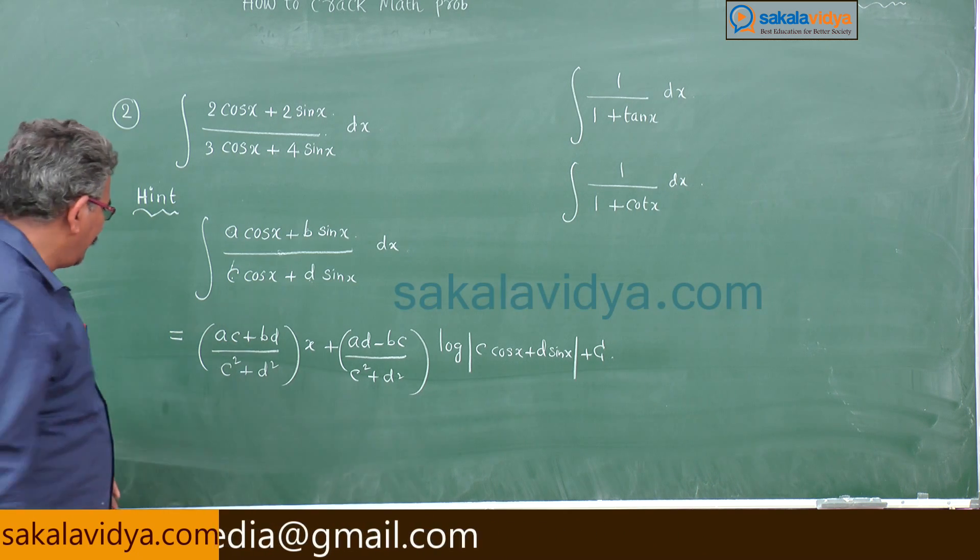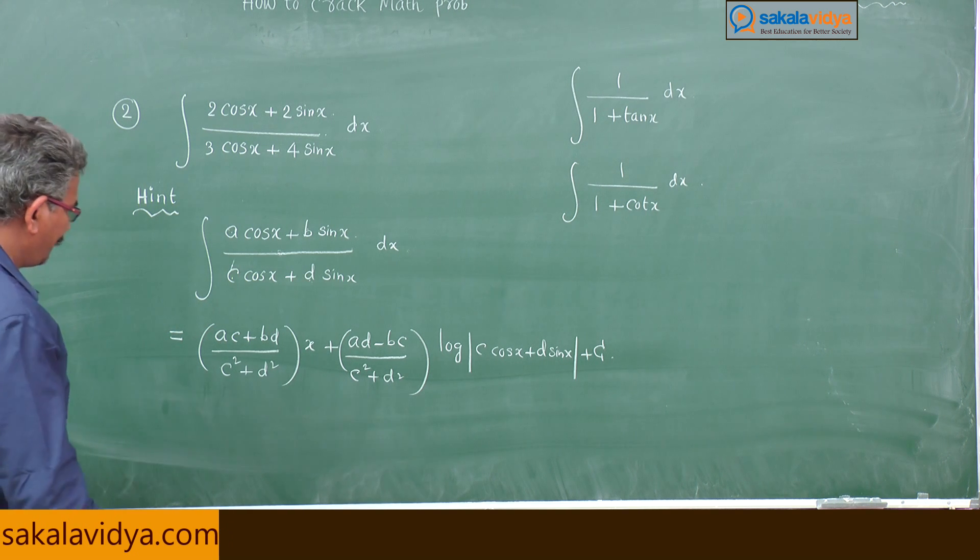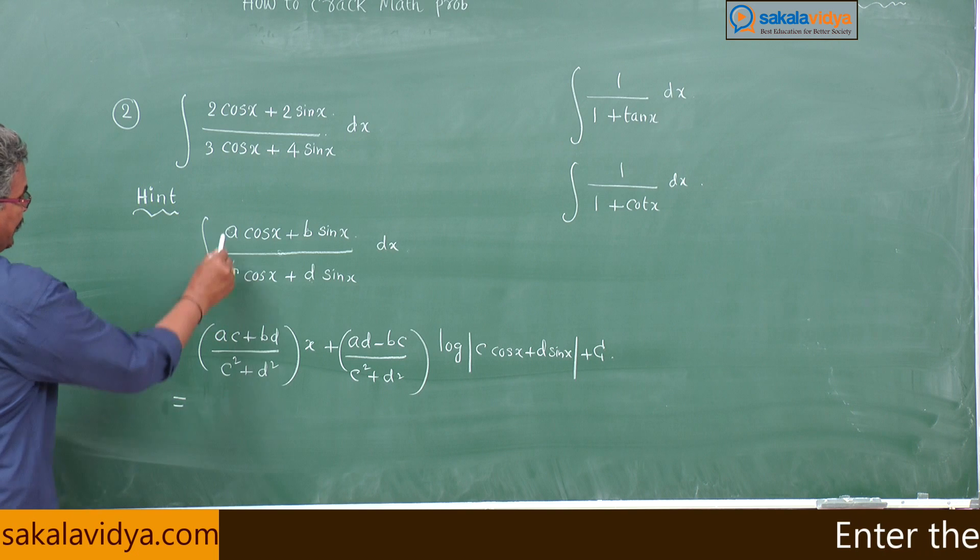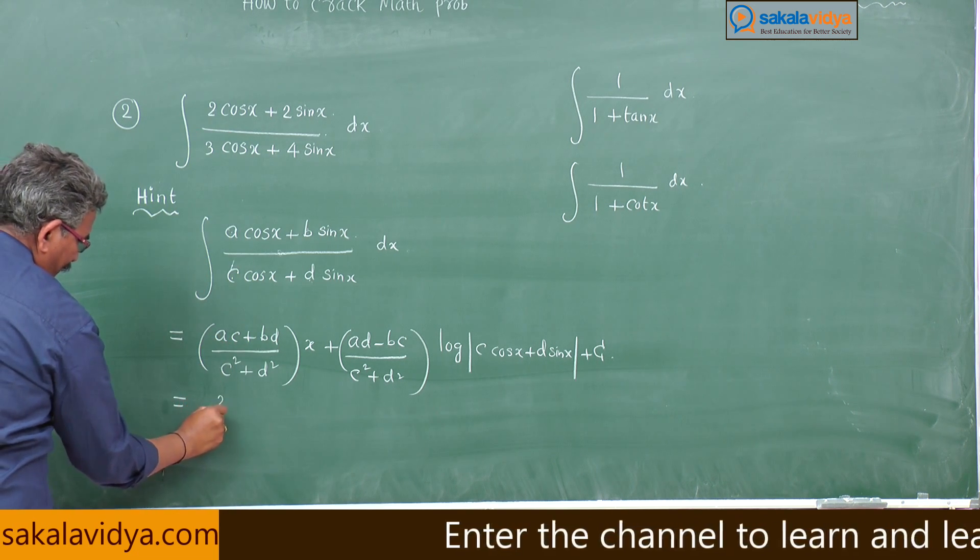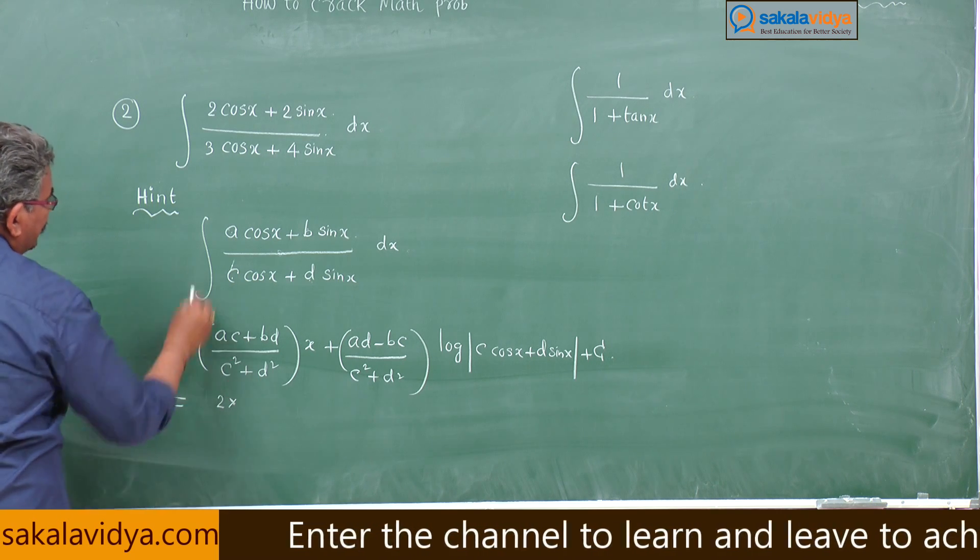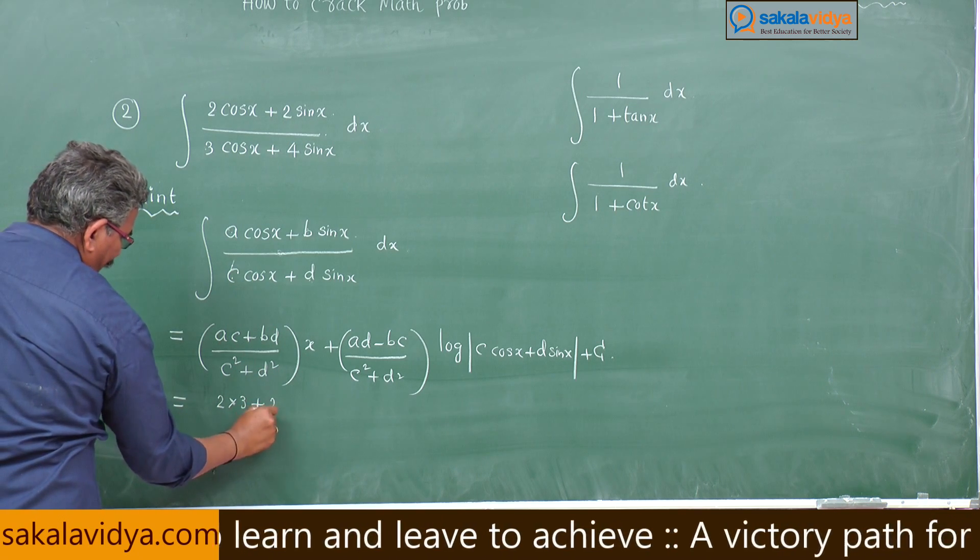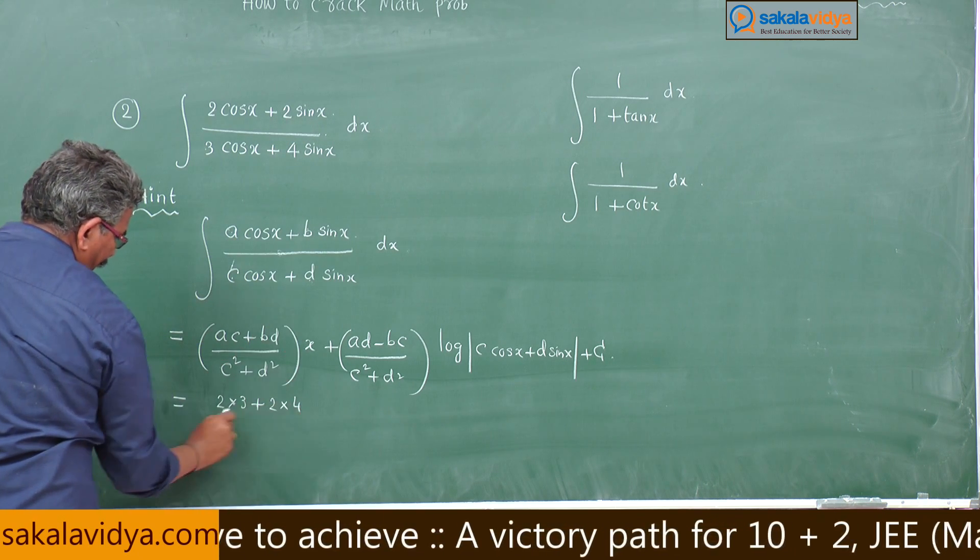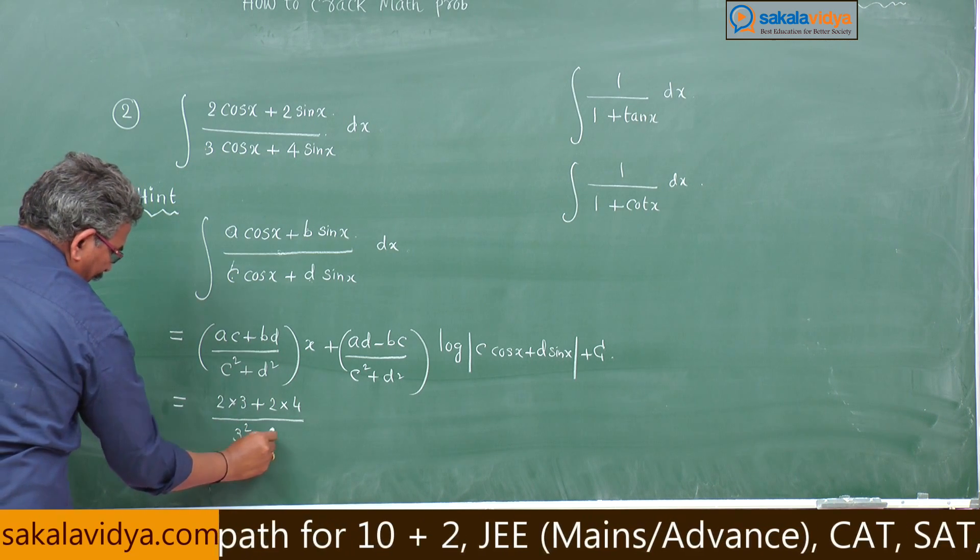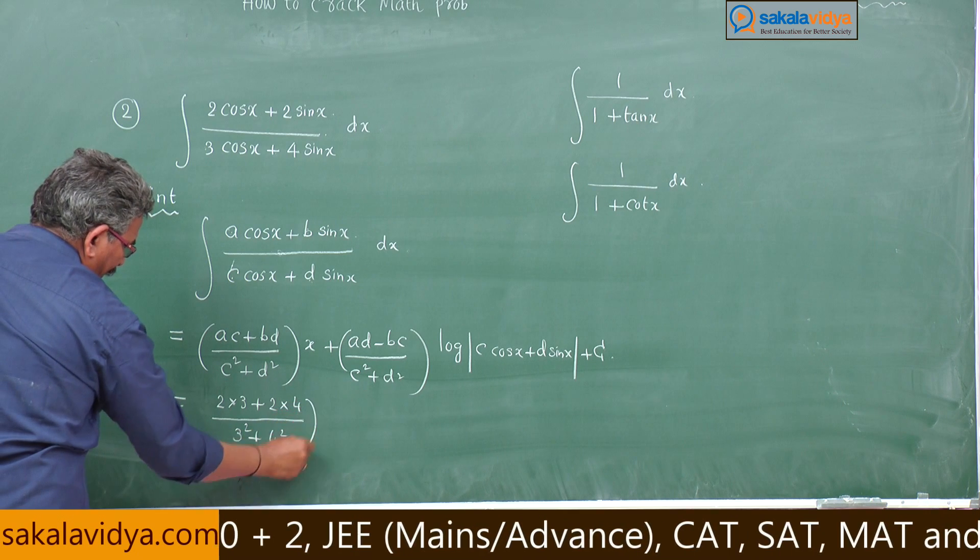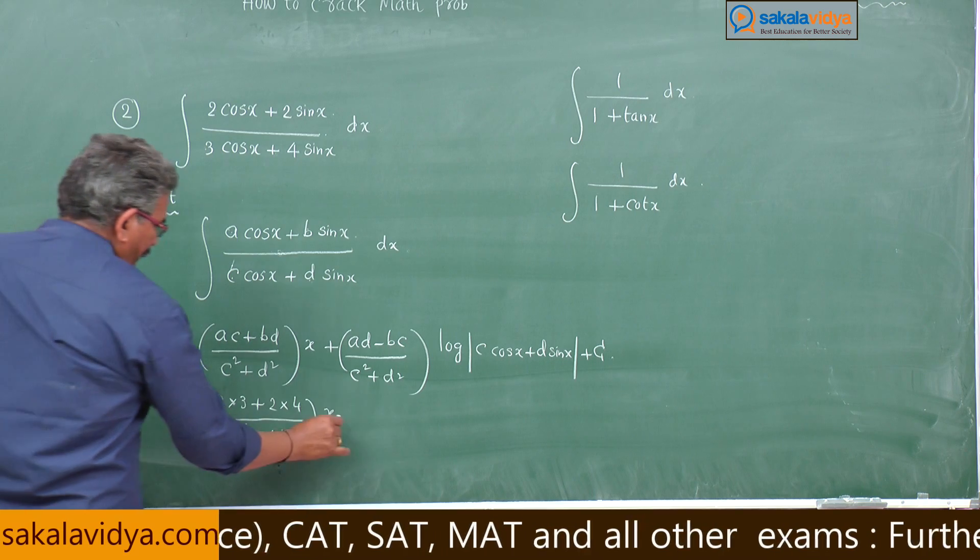Let us move to this problem now. Regarding to this problem, what is A here? A is equal to 2. So 2 into C, C means 3, plus B, B is 2, D is 4, by C square plus D square, 3 square plus 4 square of x, do not forget this x, plus AD minus BC.